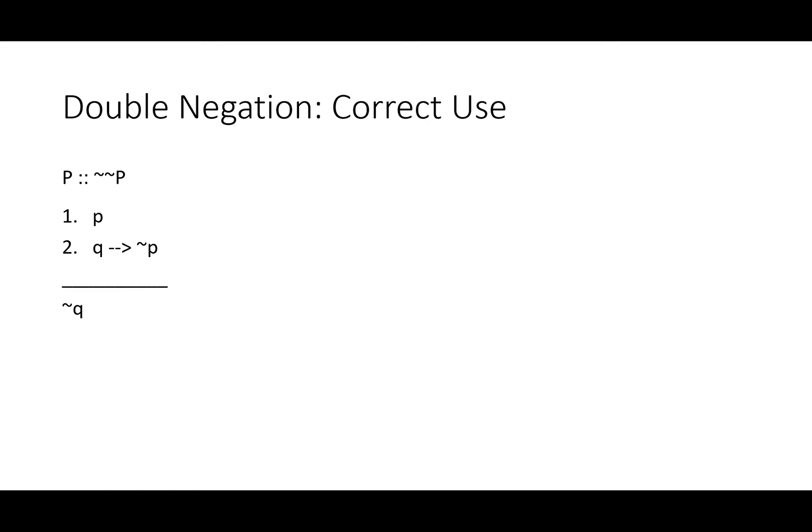Let's see how to correctly use this in a few different kinds of proofs. As a very versatile rule, it can be used in a lot of different ways. So here we have P, if Q then not P, therefore not Q.